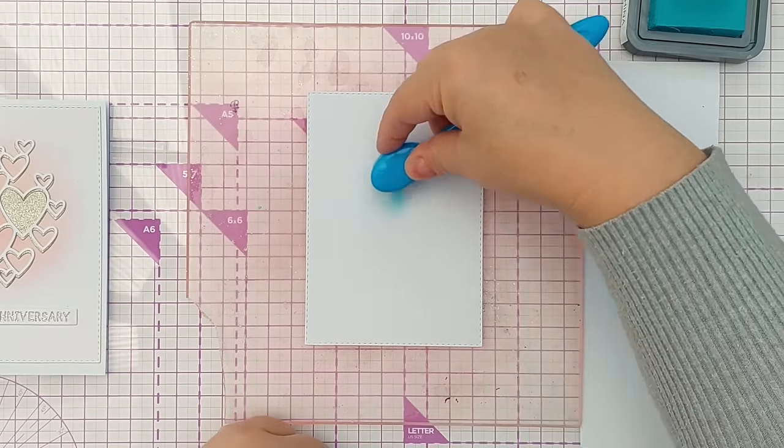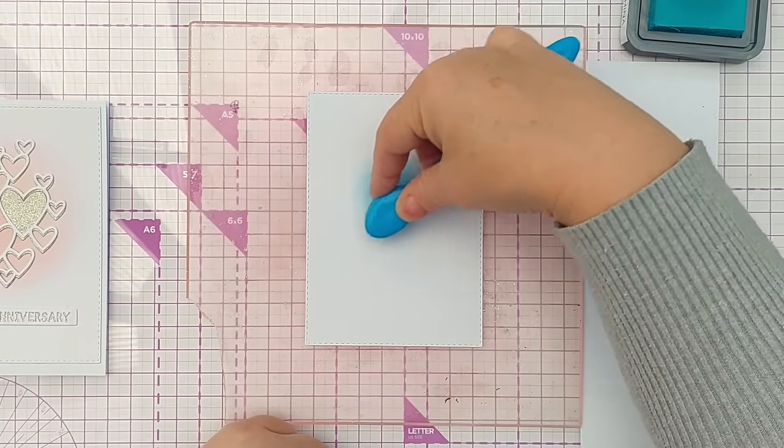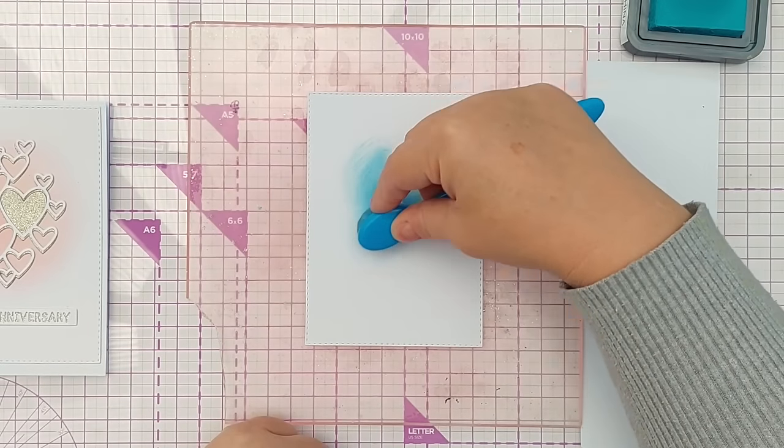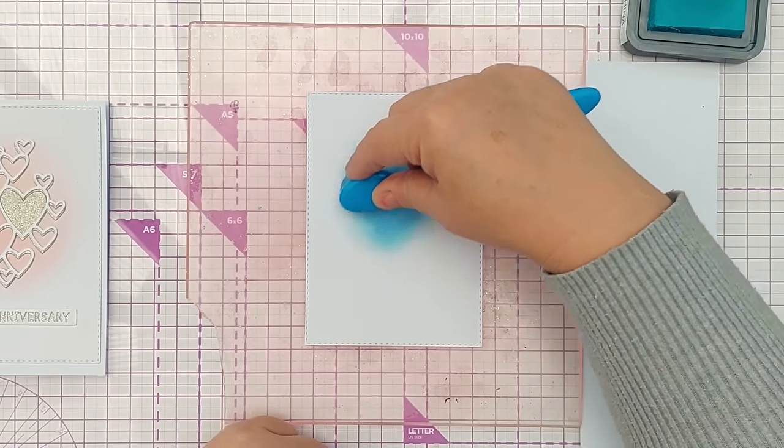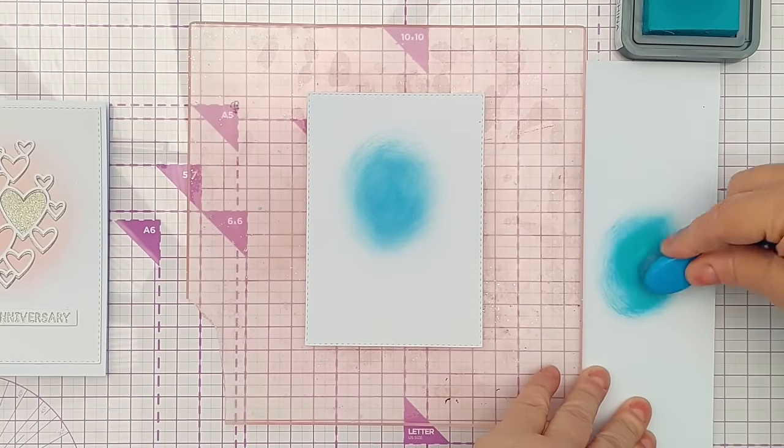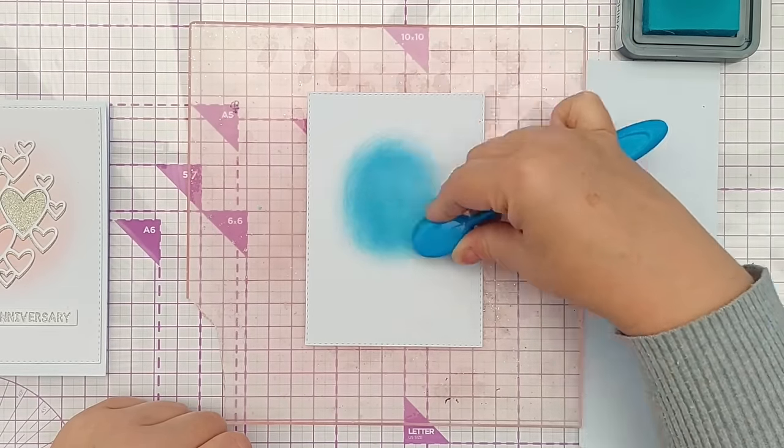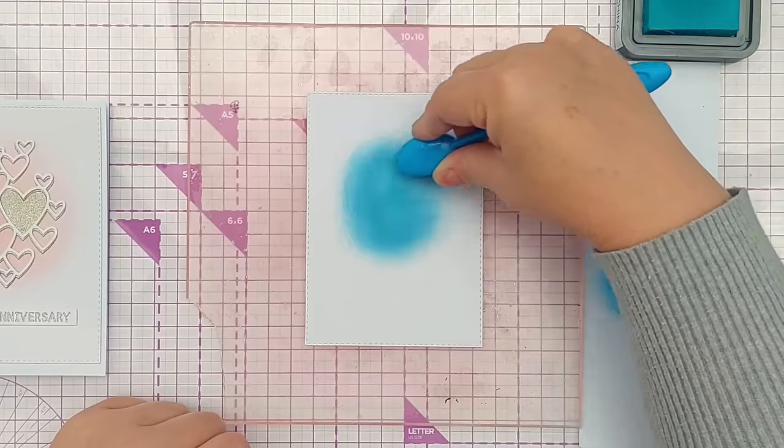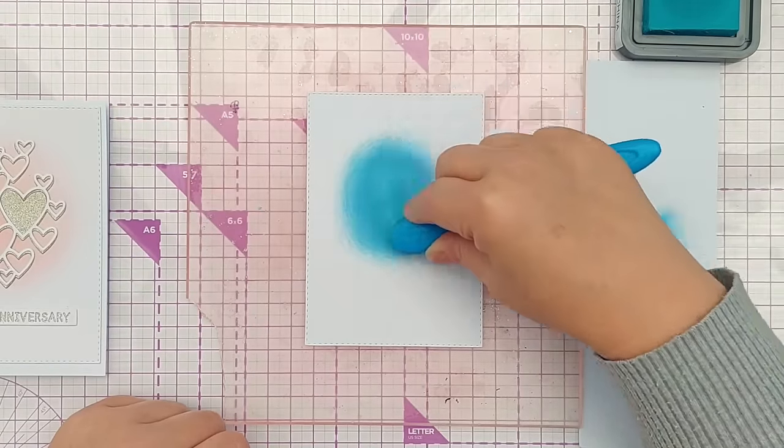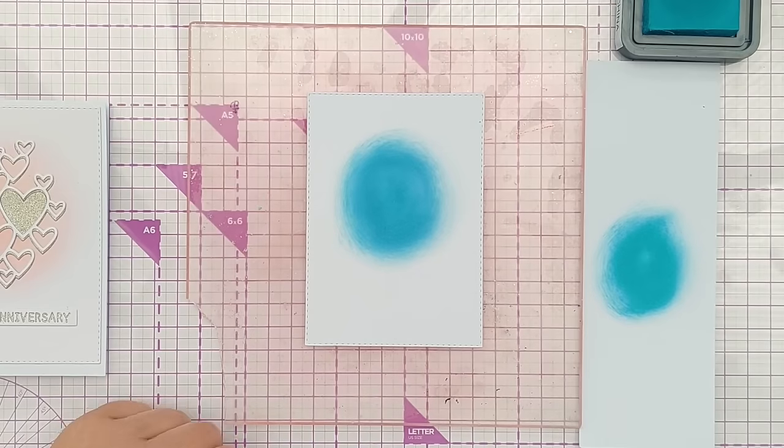I'm just creating a gentle circle of bluey green in the middle but slightly above center. So I think that'll do.